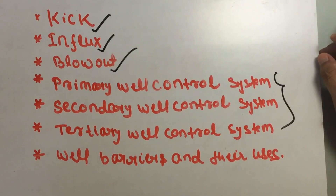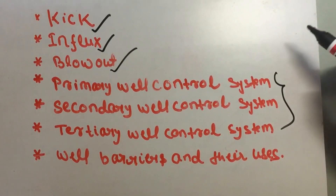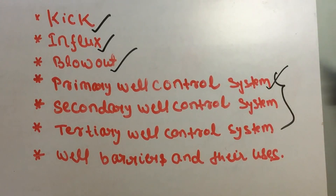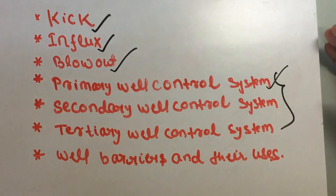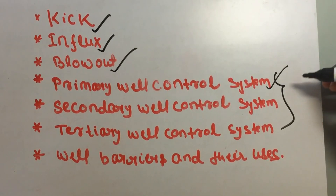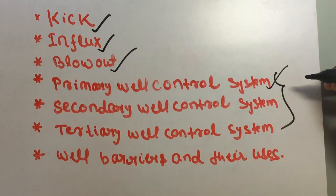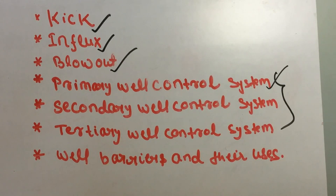When the primary well control system fails — for example when mud density decreases due to excess water mixture, or when formation pressure varies across locations — there can be a trapped pressure which gets released suddenly, causing wellbore pressure to rise immediately. That is when the primary well control system fails, and we move to the secondary well control system.